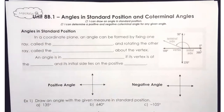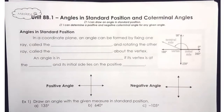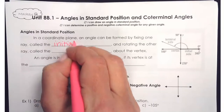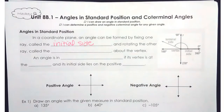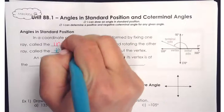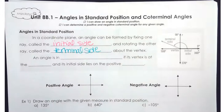When we talk about an angle in standard position, we are looking at an angle formed by fixing one ray, which is called the initial side, and then we're going to rotate the other ray, which is called the terminal side.